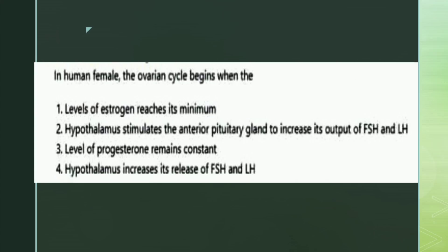The next question: the female ovarian cycle begins with what? The options are: levels of estrogen reach their minimum; hypothalamus stimulates the anterior pituitary gland to increase its output of FSH and LH; level of progesterone remains constant; or hypothalamus increases its release of FSH and LH. The right answer is option four: hypothalamus increases its release of FSH and LH.